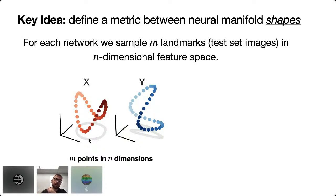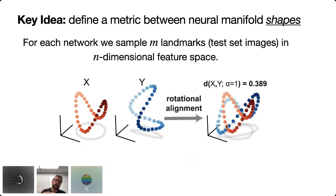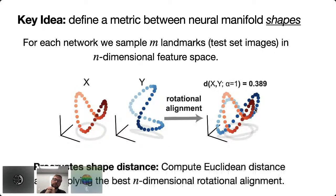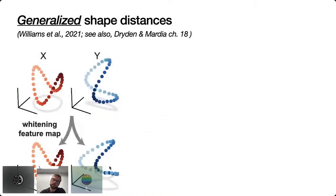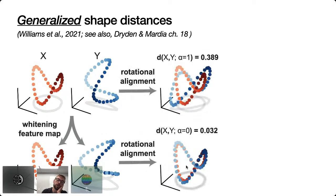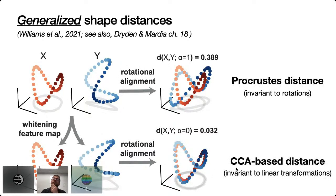The point clouds are rotated and misaligned because neuron labels aren't matched across networks — coordinate axes are arbitrarily permuted. The suggestion from shape analysis is to find the best rotation, translation, and scaling that aligns the two point clouds, then compute the distance in the aligned space. This defines a proper metric satisfying the triangle inequality, known as the Procrustes shape distance. Another useful metric involves pre-processing by whitening to identity covariance before rotational alignment, which is closely related to canonical correlation analysis.